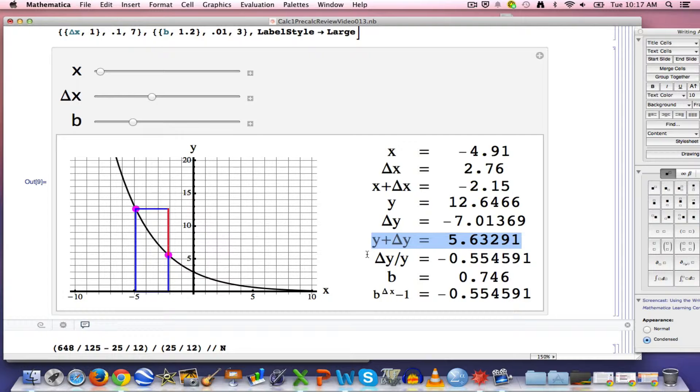So all those things are in the picture. The relative change is negative 0.555, about a 55.5% decrease is the way you want to think of this. Delta Y, by the way, is not the length of this red line now. It's the negative of the length. So you have to think of that as a negative quantity. The relative change is about negative 55.5%. That is the amount of decrease in the value of Y as a percentage. And it still does equal B to the delta X power minus 1.